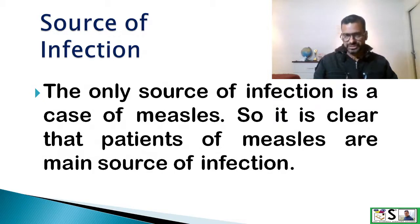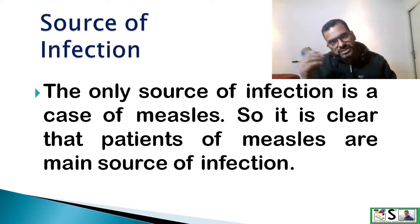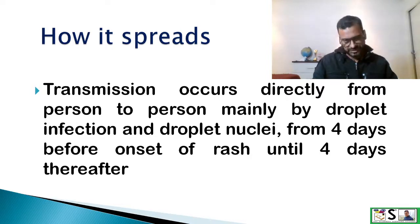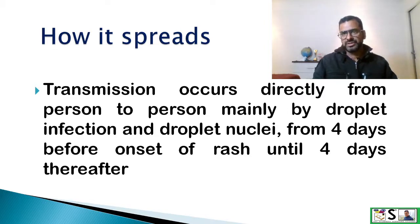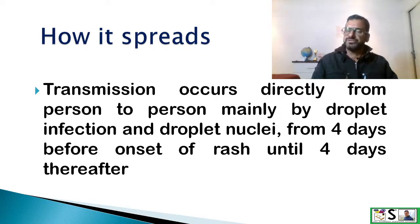Source of infection: The only source of infection is the case of measles, so it is clear that patients with measles are the source of infection from where the infection starts spreading. Transmission occurs directly from person to person, mainly by droplet infection or droplet nuclei. From 4 days before the onset of rash and until 4 days thereafter, the patient is infective and can spread infection to others.